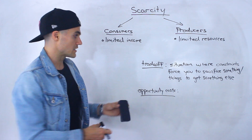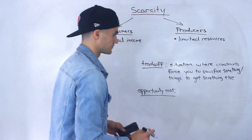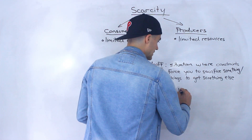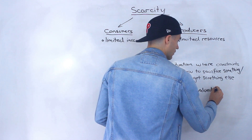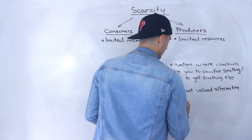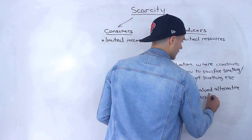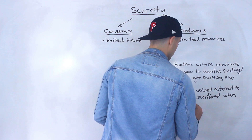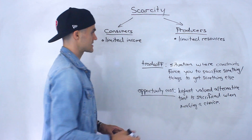While an opportunity cost — let's keep this singular, not plural — so an opportunity cost, out of all the different choices you have, is basically the highest valued alternative that is sacrificed when making a choice. Let's break this down with an example.